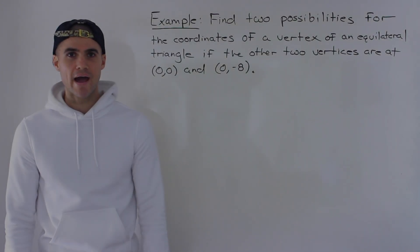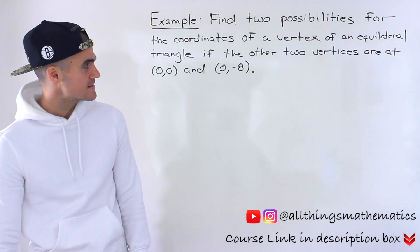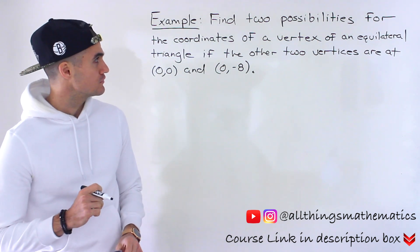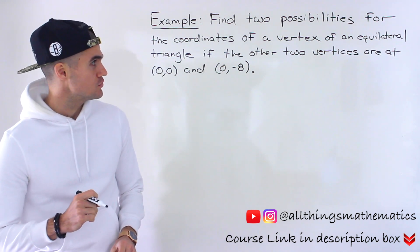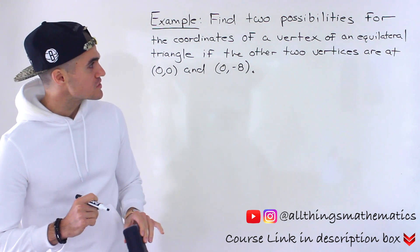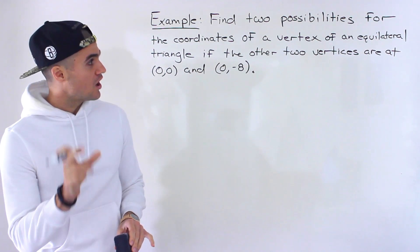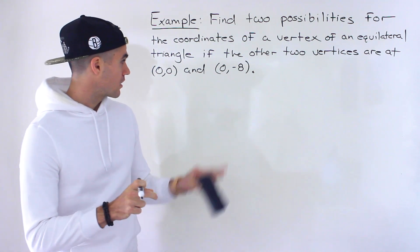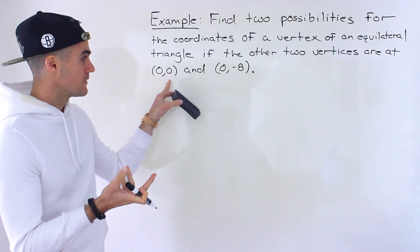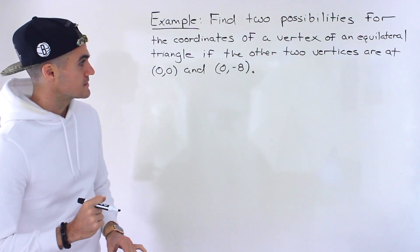What's going on everyone? Welcome back. Patrick here, and moving on to the next example. This one's going to be a little bit tricky, a little bit different. So find two possibilities for the coordinates of a vertex of an equilateral triangle if the other two vertices are at the point zero and zero, so at the origin, and then at zero and negative eight.